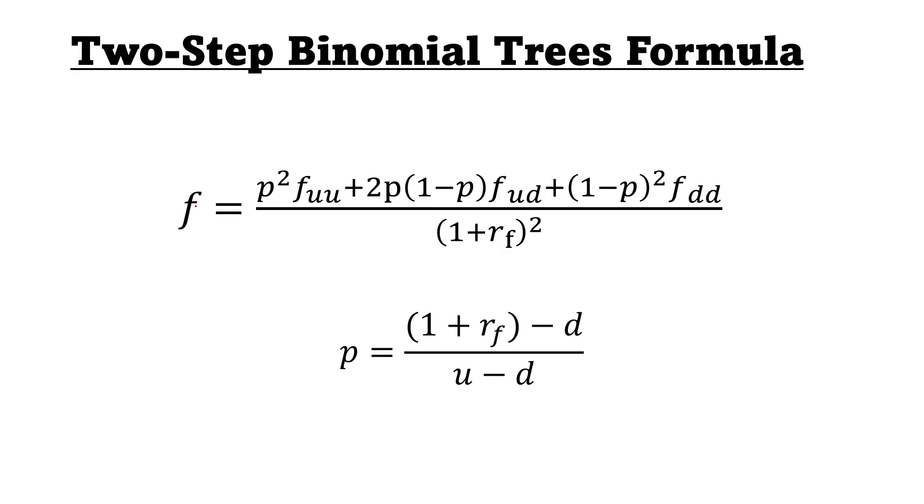Let's talk about a two-step binomial tree now. Here are the two formulas that we're going to need. The first one is to calculate the current value of the call option. So F is the current value of any option, so of the option.